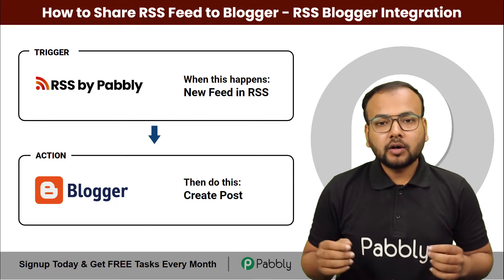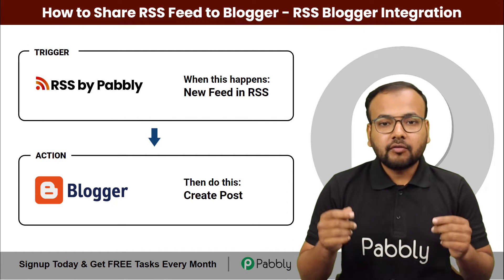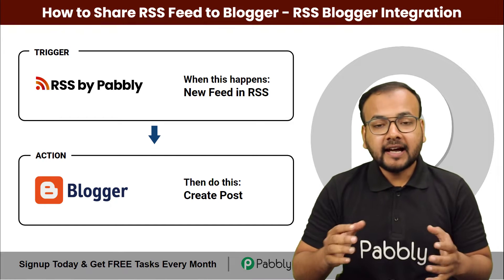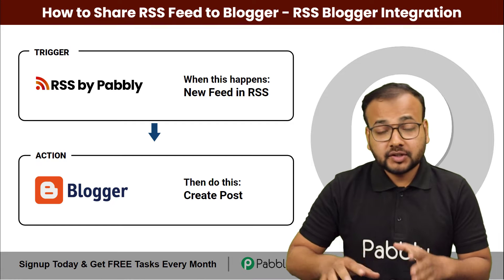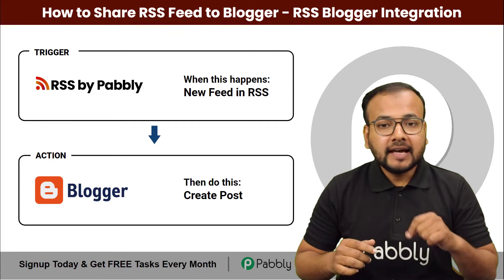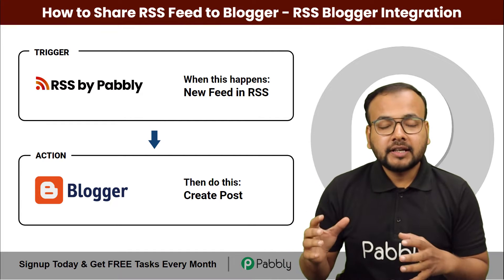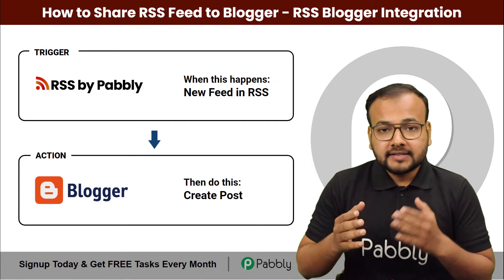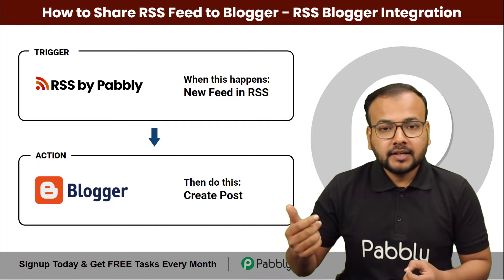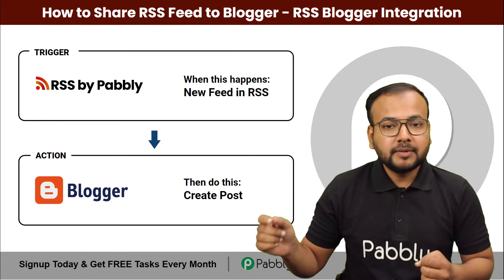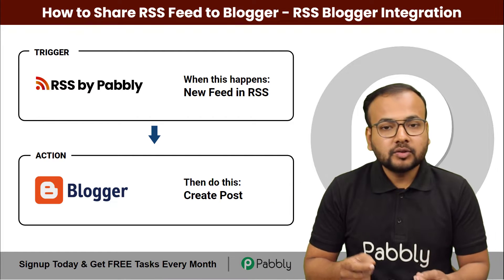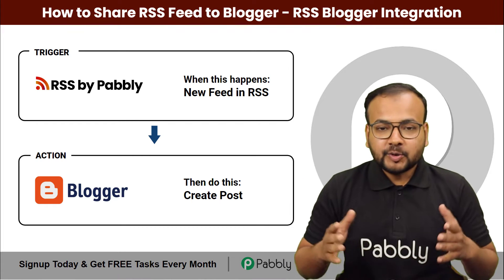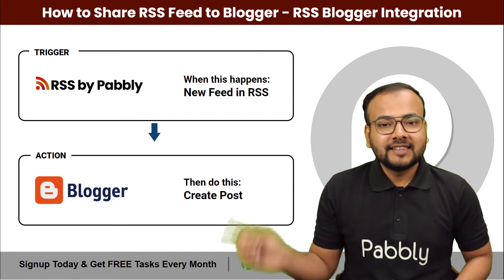This video is for all the bloggers out there. If you are running a blog on Google Blogger and you want to improve user engagement by sharing RSS feeds of different websites into your blog, this automation can be really helpful. We are going to connect the RSS feed of any website in the trigger and Google Blogger in the action, such that whenever there is a new RSS feed on a website, the feed will be shared to your Google Blogger automatically — no manual copy-pasting, saving your time. We are going to set up this automation very easily without any coding. Let's start.